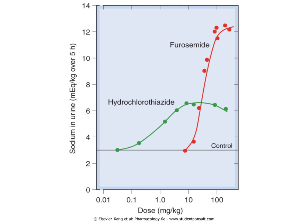Regarding the dose-response of this group, the green curve shows hydrochlorothiazide as a good example. As we increase the dose, we increase sodium excretion until we reach a plateau where further dose increases yield no additional diuretic effect. Therefore, thiazides are called low-ceiling drugs. In contrast, loop diuretics like furosemide, represented by the red curve, belong to the high-ceiling diuretics — as we increase the dose, we get more diuretic effect.